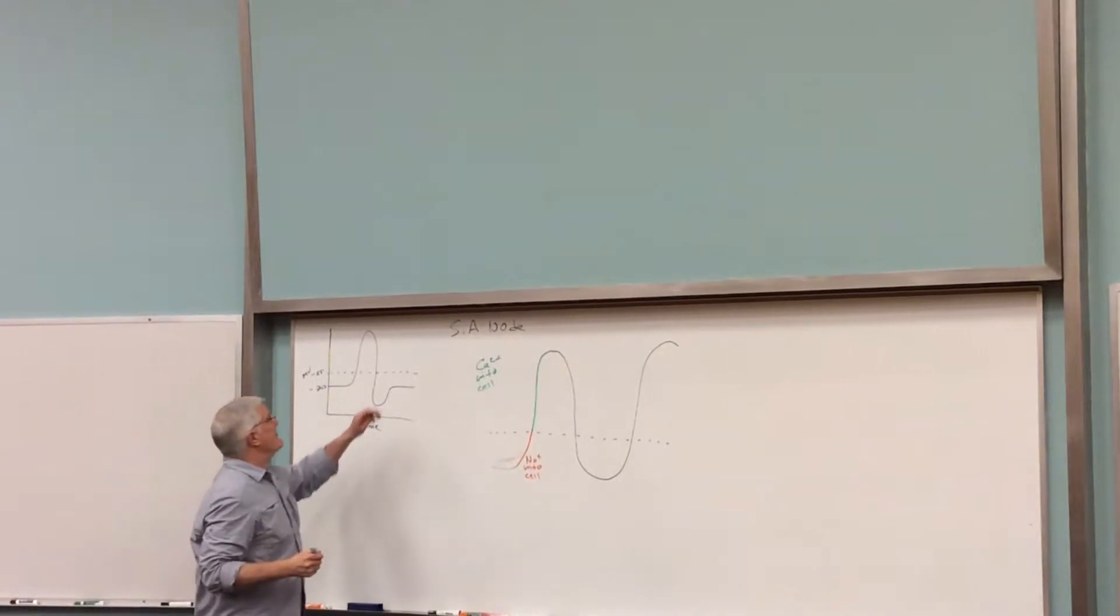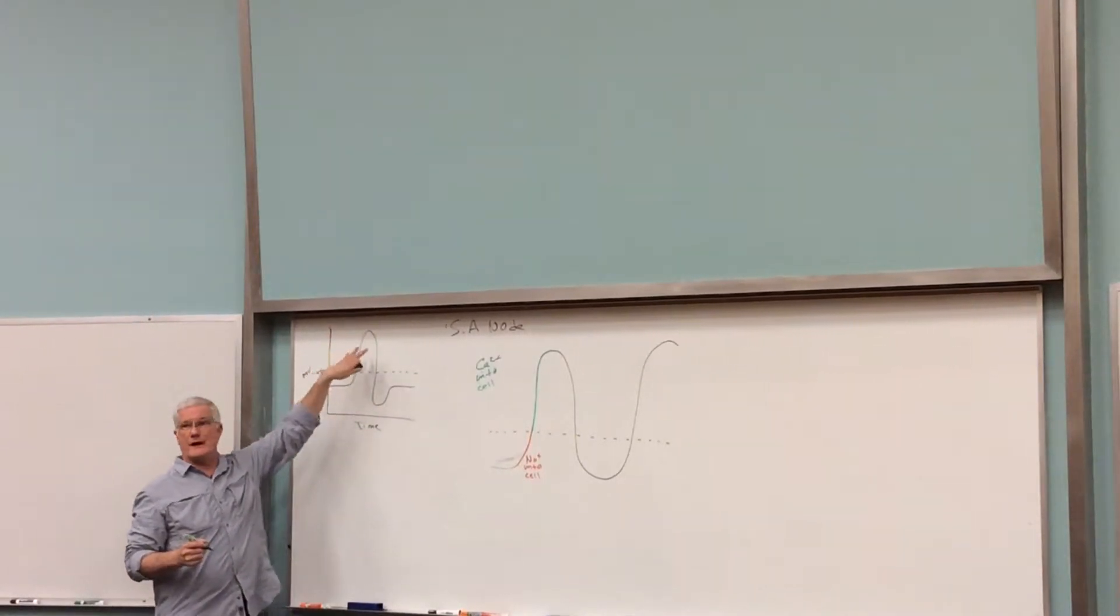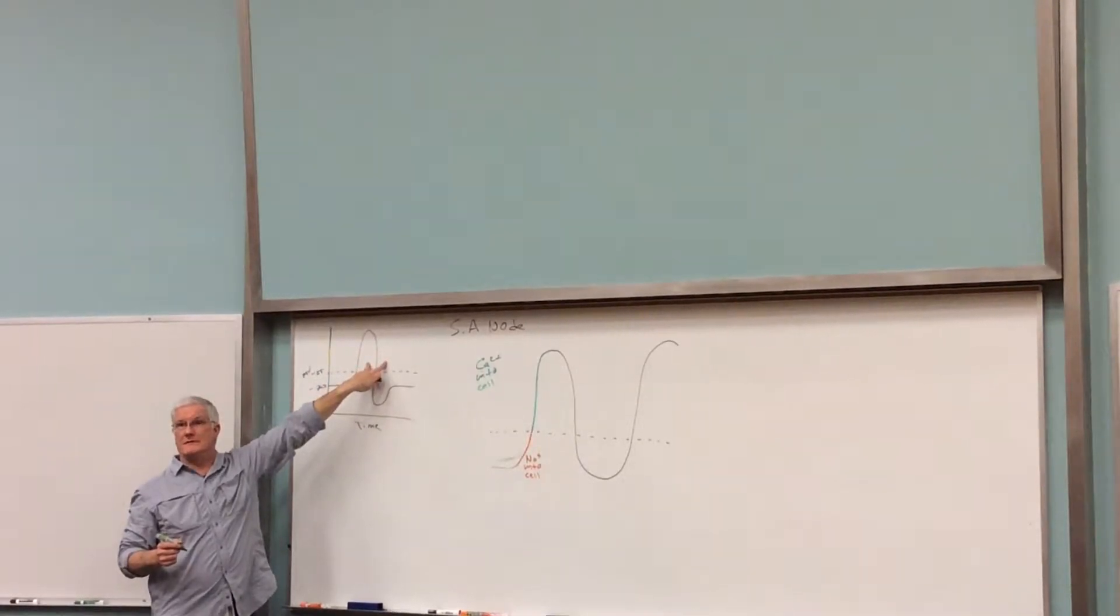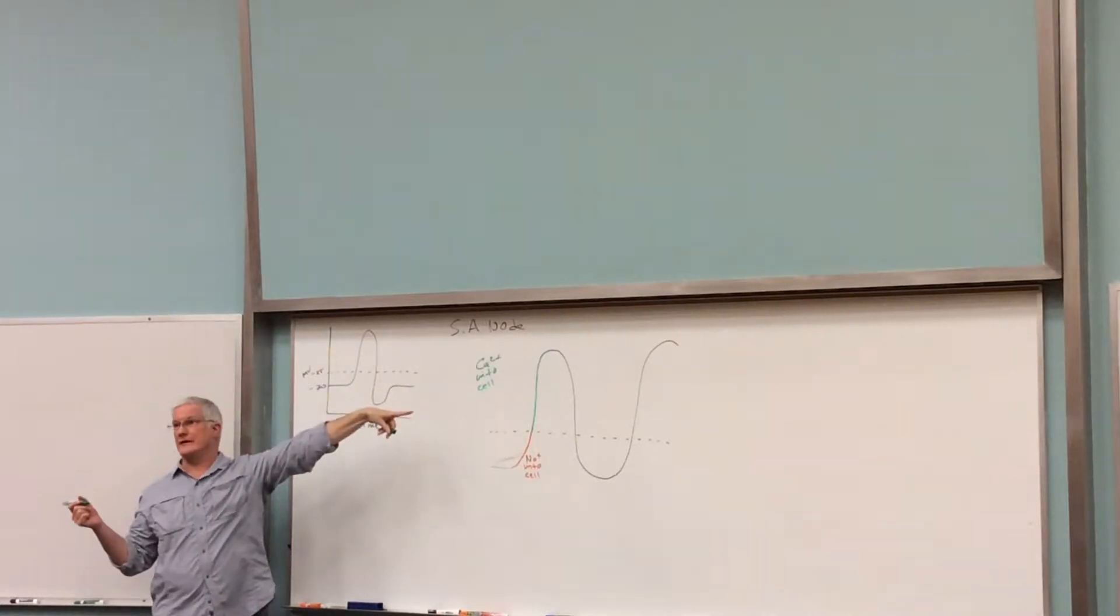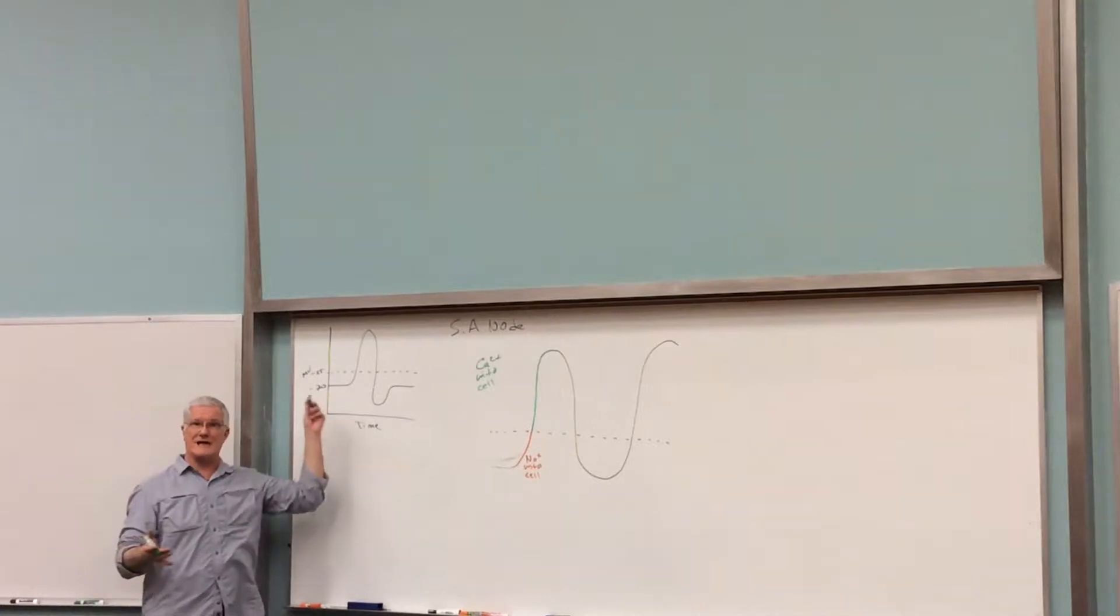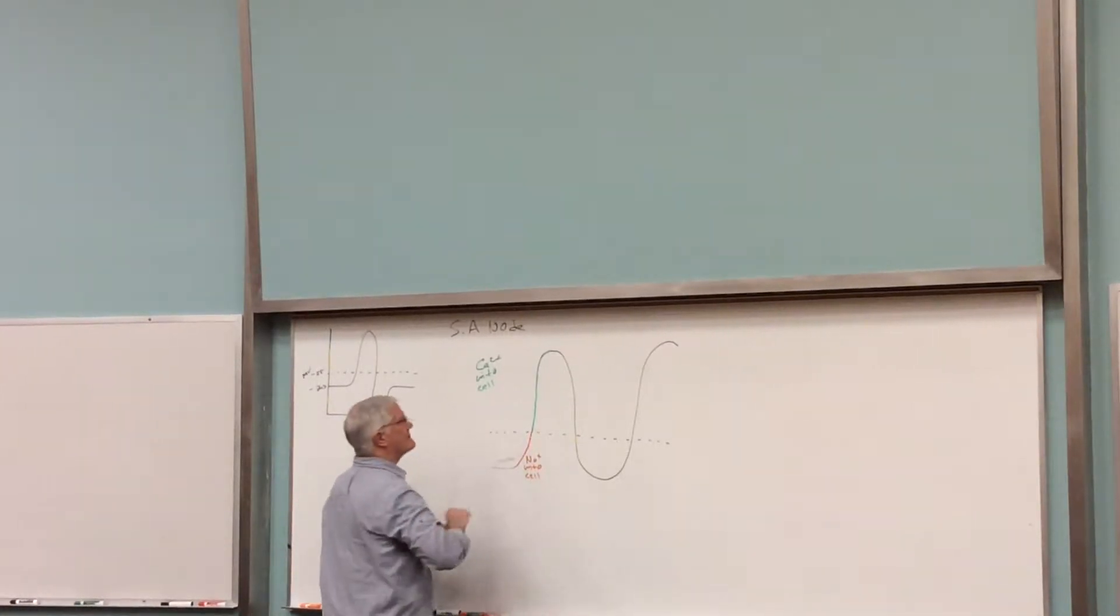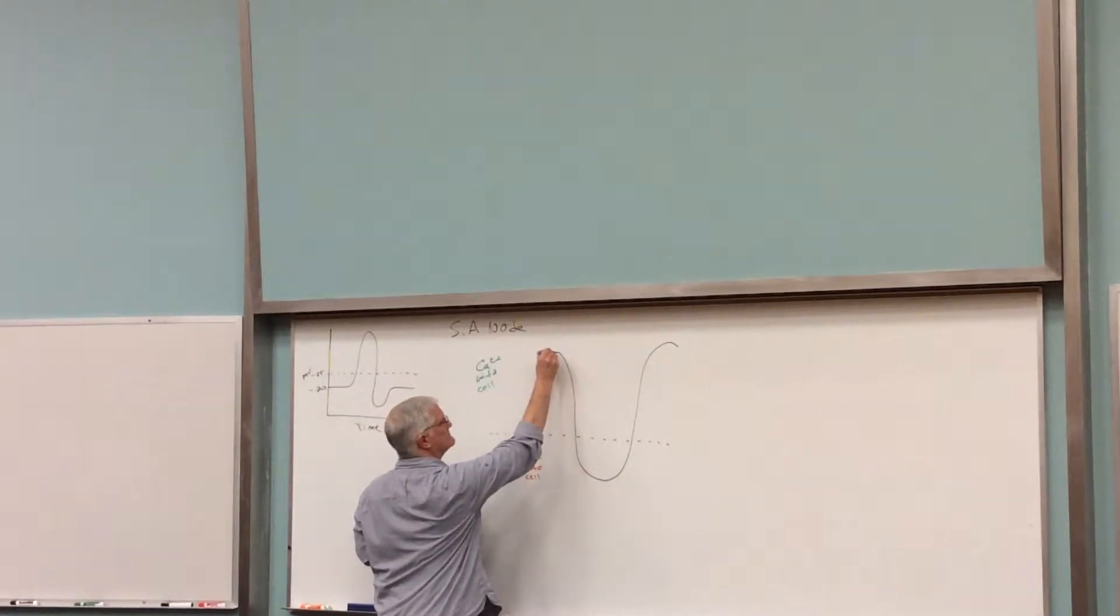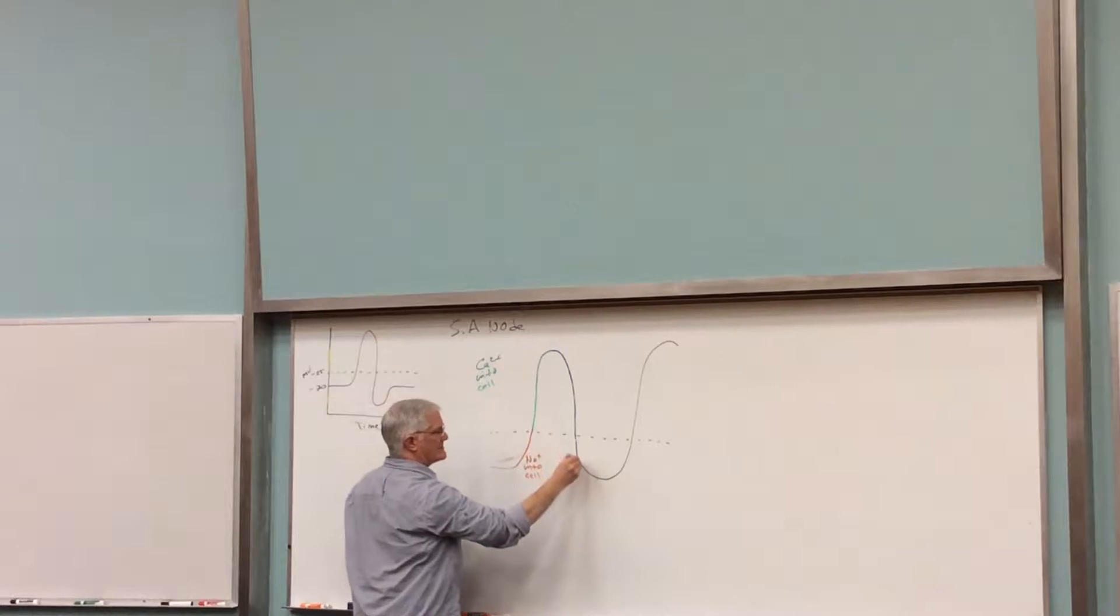What's nice is the repolarization of a neuron or skeletal muscle was due to what ion? Potassium. Which way was potassium diffusing? Out. Same thing over here. At least that's one thing you can remember that's the same as a neuron. This is simply due to potassium diffusing out of the cell.